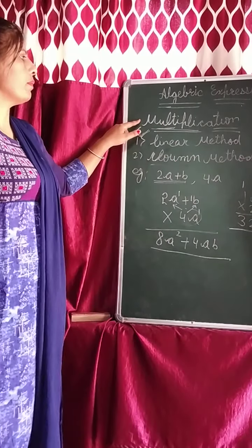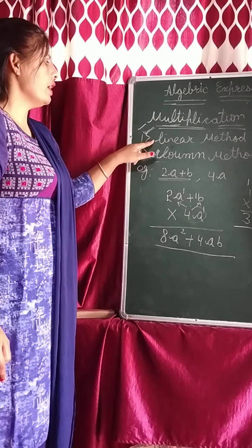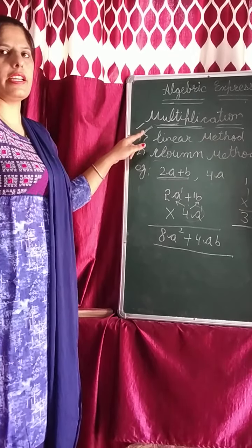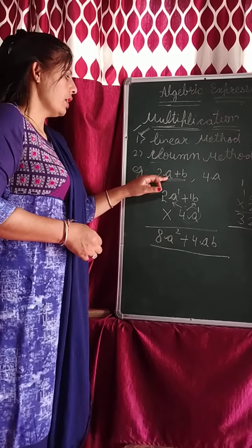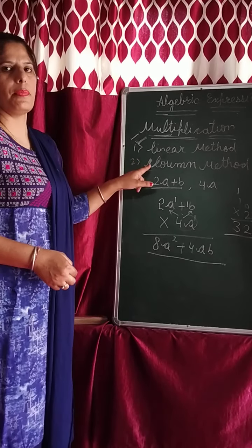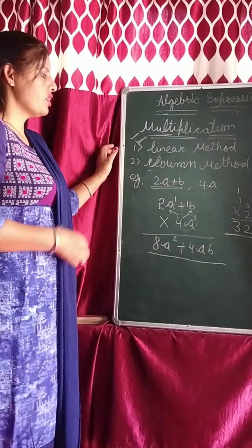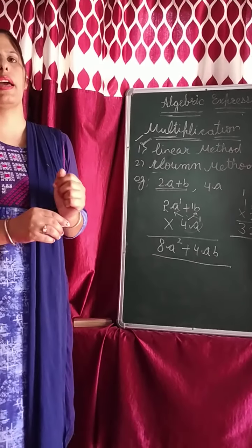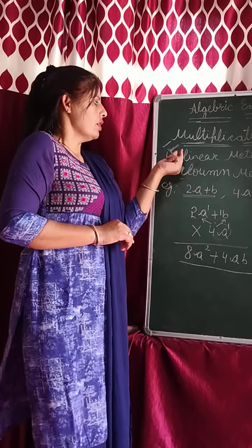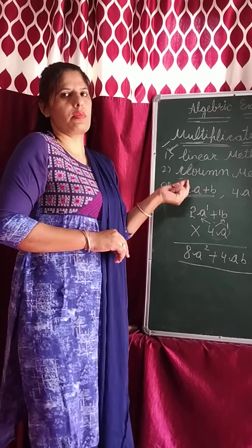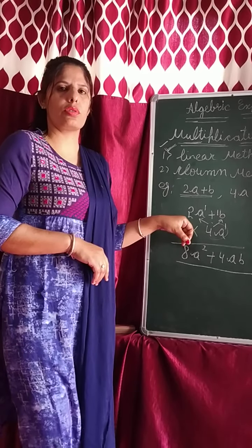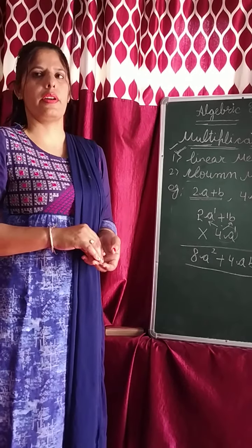So today we have done multiplication in algebraic expressions using the linear method and the column method. We solved sums with single variables and with double variables, using both linear method and column method. If in the exam, the sum is given directly and it is not mentioned which method to use — linear or column — then you can use any method you wish. But if it is mentioned to use the linear method, then use the linear method; otherwise, as you wish. Thank you, have a nice day.